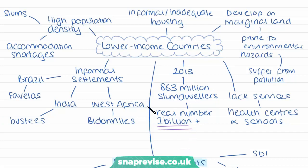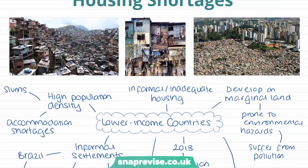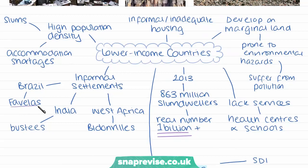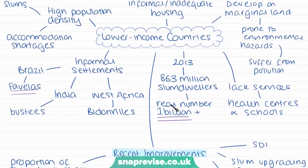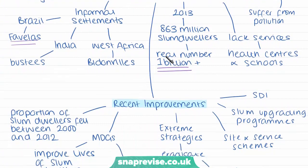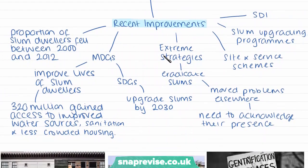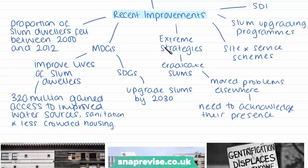Informal settlements take on different names in different locations. In Brazil, they are called favelas. In India, slums are called busties. And in West Africa, slums are called bidonvilles. The use of the term 'slum housing' has been criticised as a political label — for example, in Mumbai, some large settlements such as Dharahavi are referred to as 'homegrown neighbourhoods' instead, as it carries less of a negative connotation towards slum dwellers.